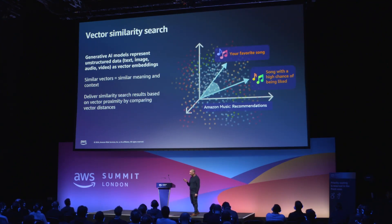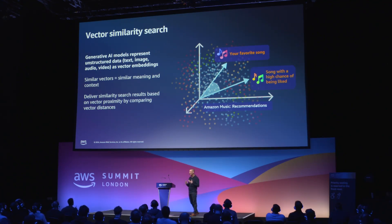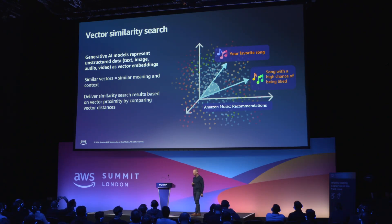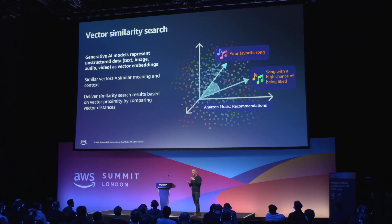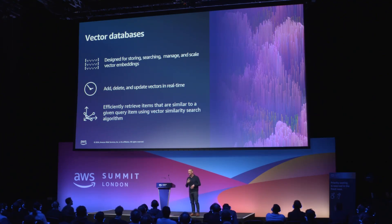RAG really depends on vector similarity searches. A vector similarity search is how generative AI models understand unstructured data and context. Vectors make it easy to find similar content in very large unstructured datasets, and this gives you the search ability to find similar items or entities based on the distance between the objects.